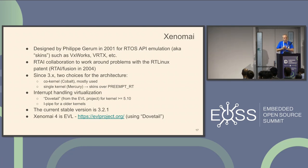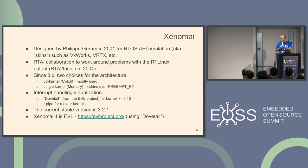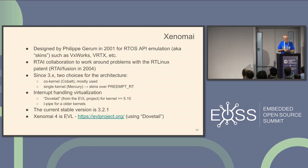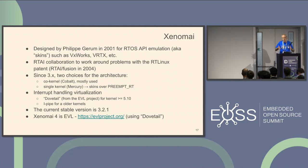There are two choices for the architecture. You can use a co-kernel called Cobalt, which is the most used architecture. And there is a single kernel approach called Mercury, which is just the skins over Preempt RT. I think it's not very interesting, but it's there.